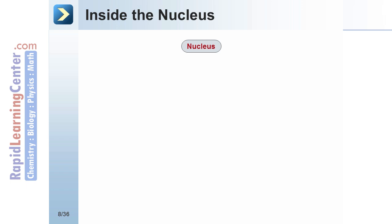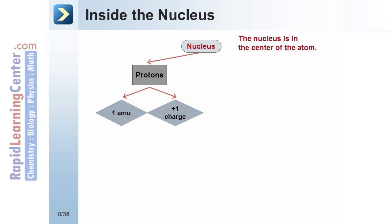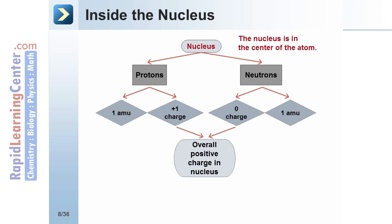The nucleus is the center of the atom. It is composed of protons with a mass of 1 amu and a charge of plus 1, and also neutrons that have a charge of 0 and a mass of 1 amu. Together, the protons and neutrons give the nucleus an overall positive charge.